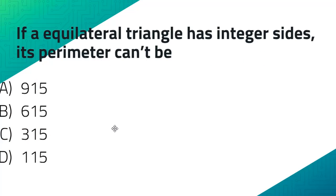The next question is: if an equilateral triangle has integer sides, its perimeter can't be. If it has integer sides and is an equilateral triangle with three sides, then the total number has to be divisible by three. Let's see which ones of these are divisible by three.